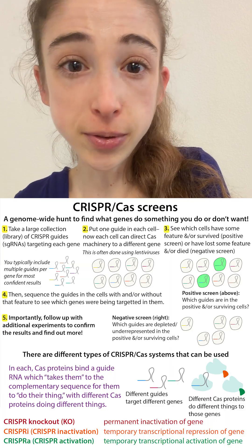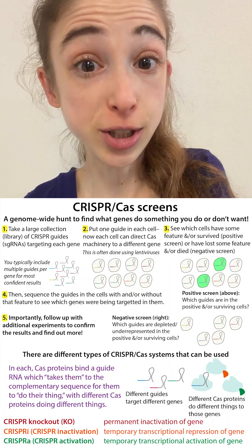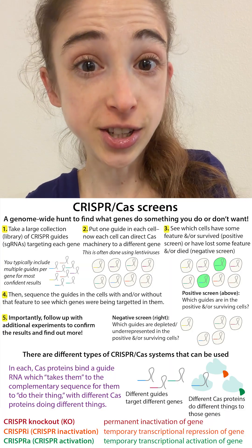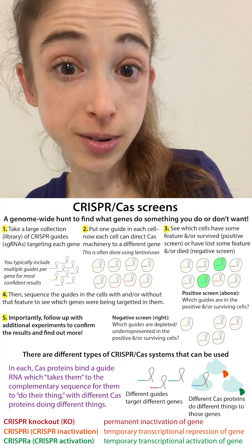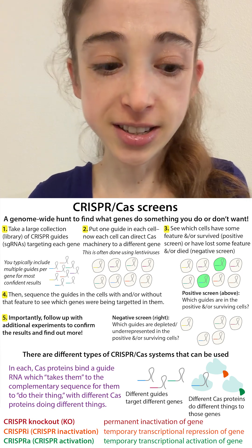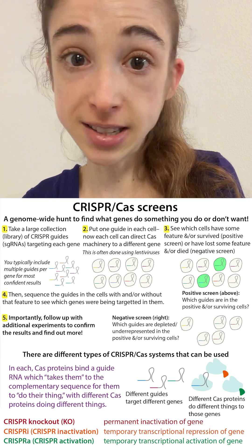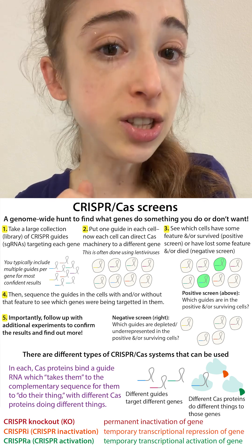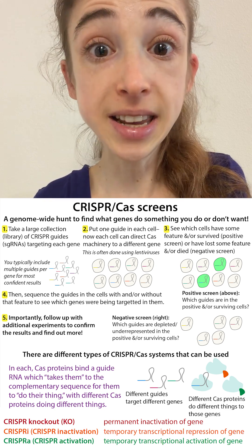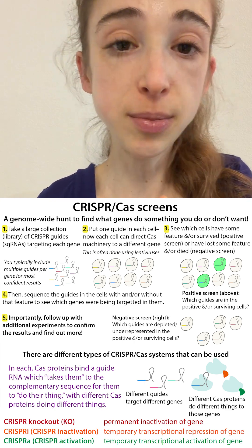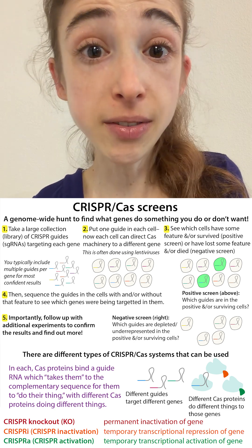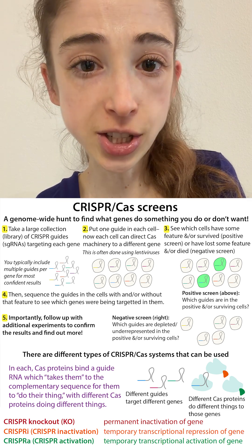CRISPRa can be useful for doing things like seeing which genes are responsible for differentiation of cells from one type to another — so if you turn on this gene, does it suddenly become this type of cell? CRISPRi is useful for doing things like seeing which genes are responsible for allowing a cell to survive under various conditions.